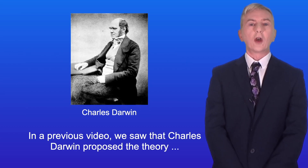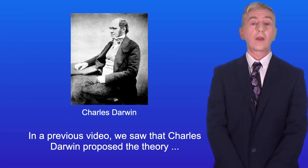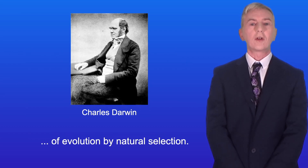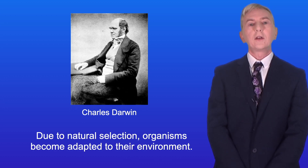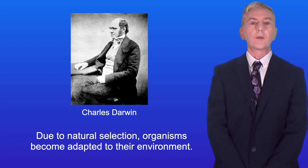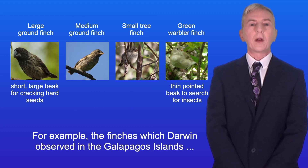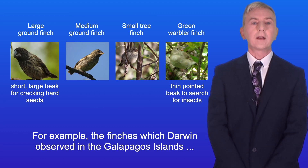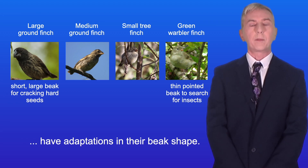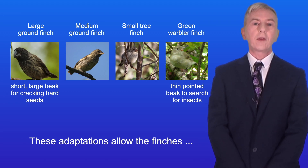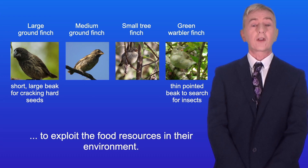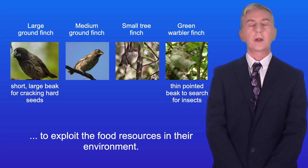In a previous video we saw that Charles Darwin proposed a theory of evolution by natural selection. Due to natural selection, organisms become adapted to their environment. For example, the finches which Darwin observed in the Galapagos Islands have adaptations in their beak shape. These adaptations allow the finches to exploit the food resources in their environment.